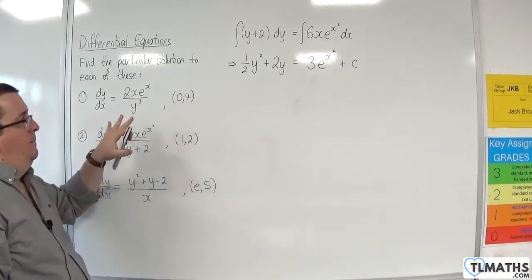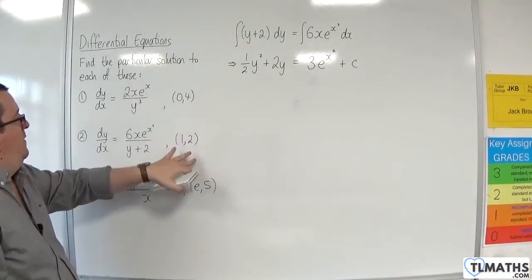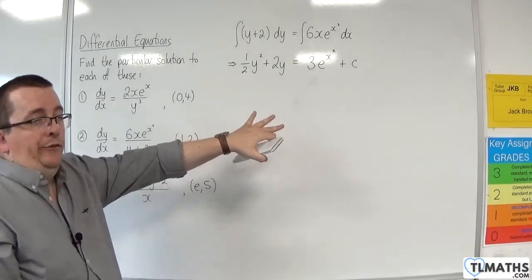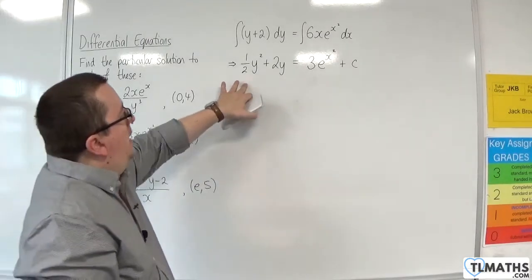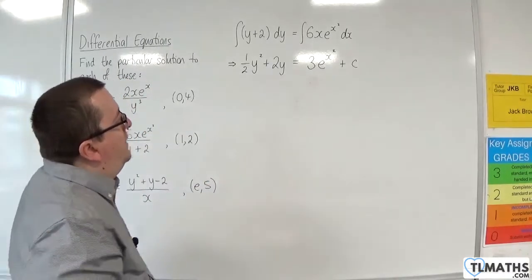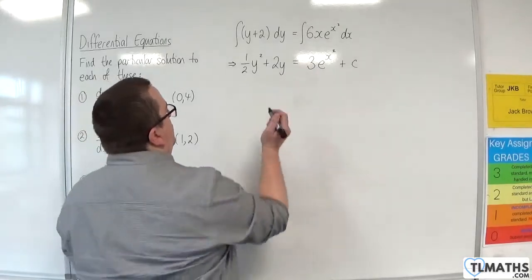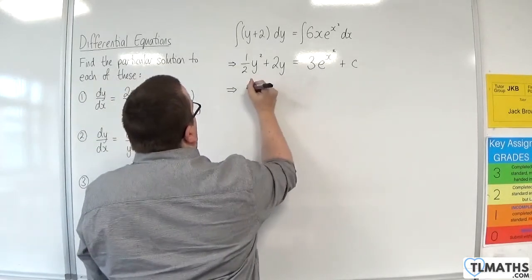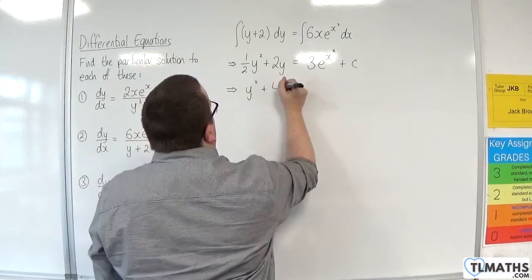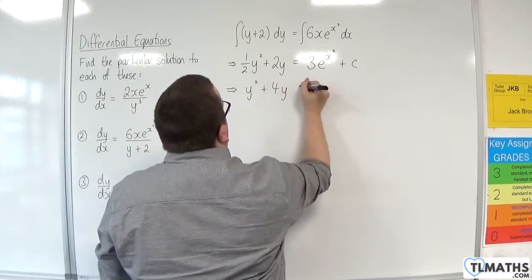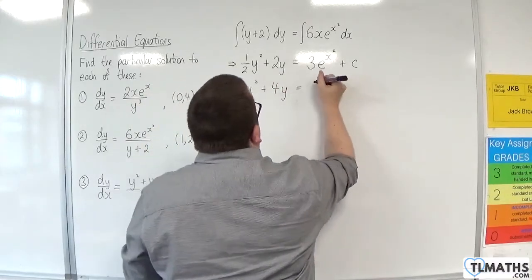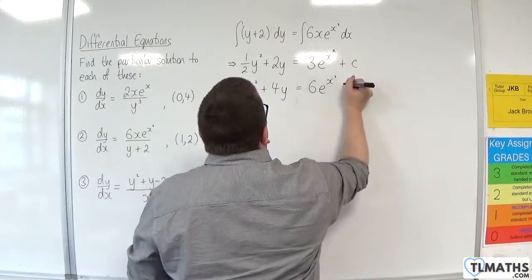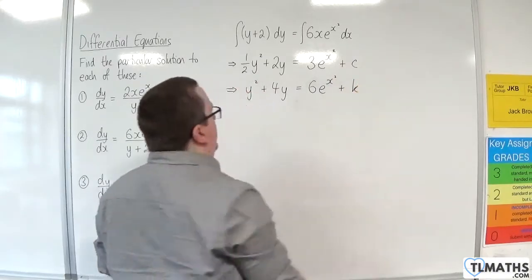Now, you could substitute in the point (1, 2) here and work out c, but I'm not too keen on having the half there, so I'm going to multiply through by 2. So y squared plus 4y is equal to 6e to the x squared plus — let's call it k.